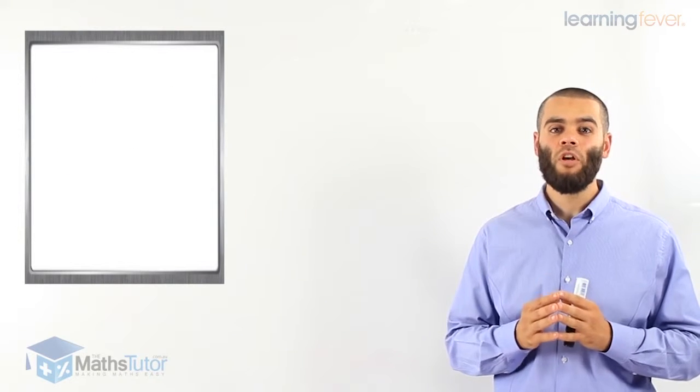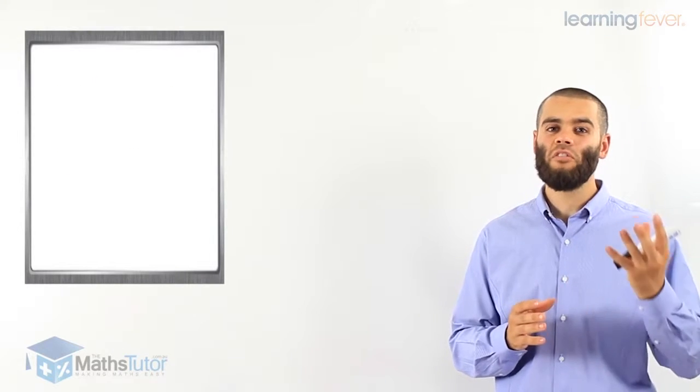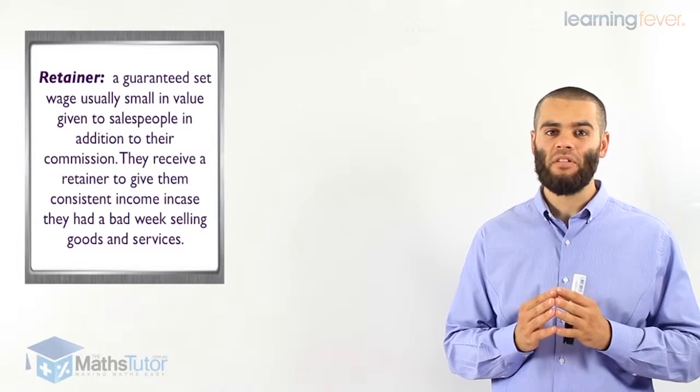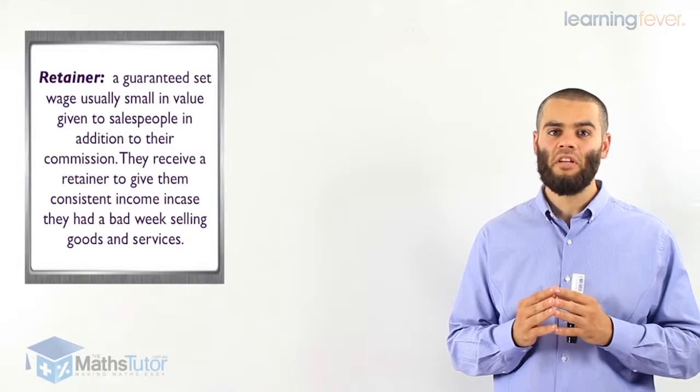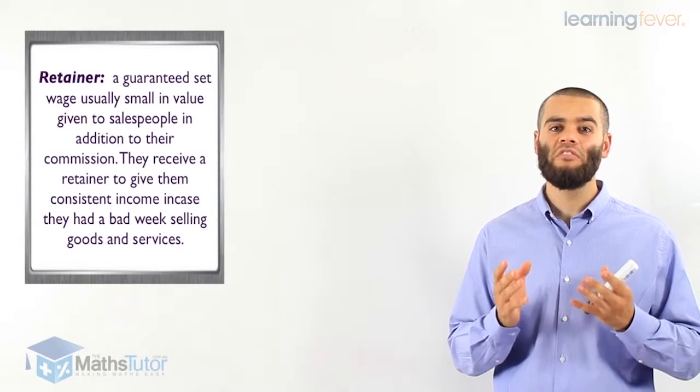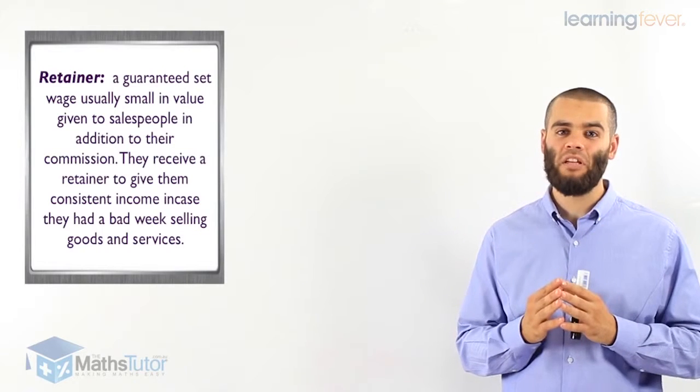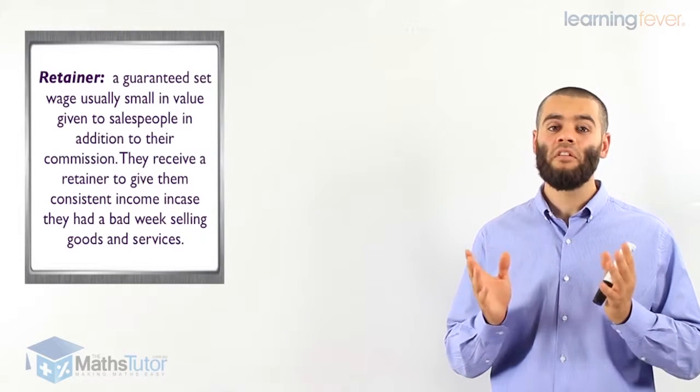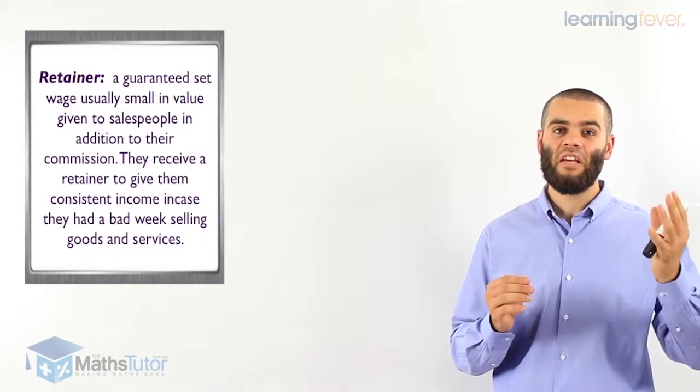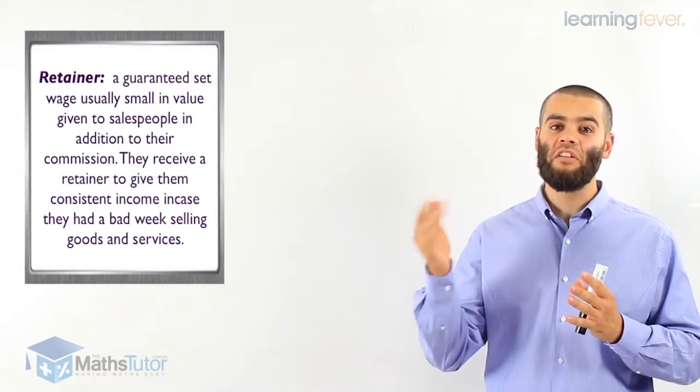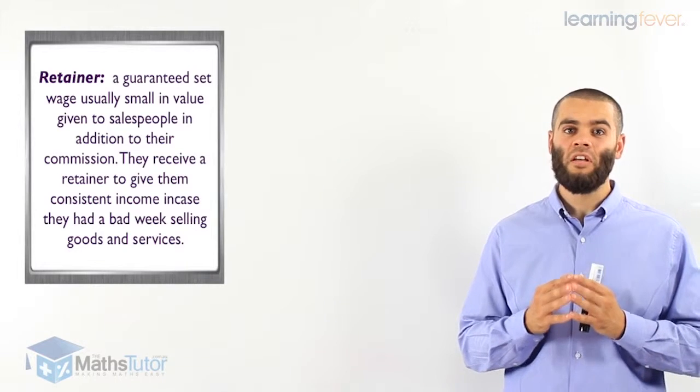Some salespeople earn commission and they also earn a retainer. A retainer is a weekly payment given to them by their boss in case they don't sell any goods or services that week, in case they had a bad week selling goods and services. So what happens is they take home this retainer plus they take commission if they sold any goods and services. Here we have an example to explain that further.